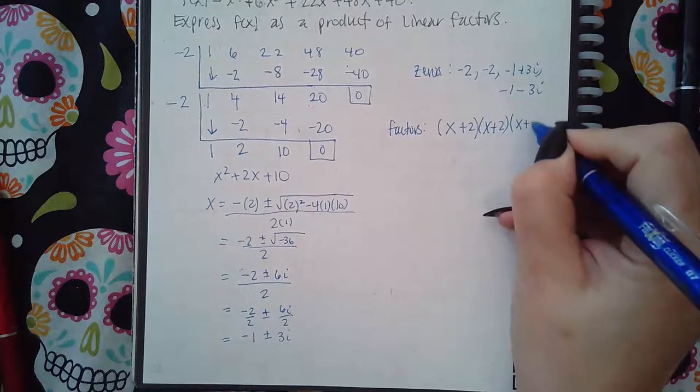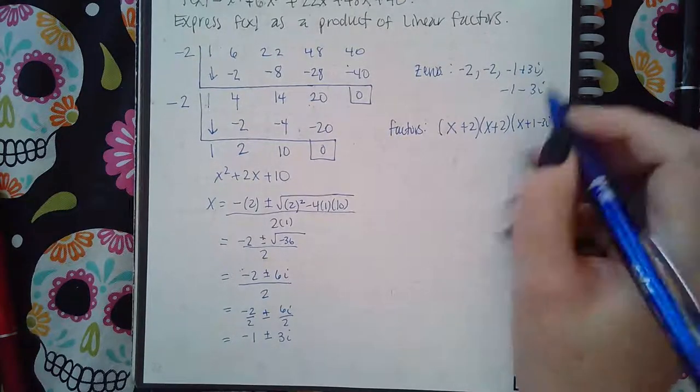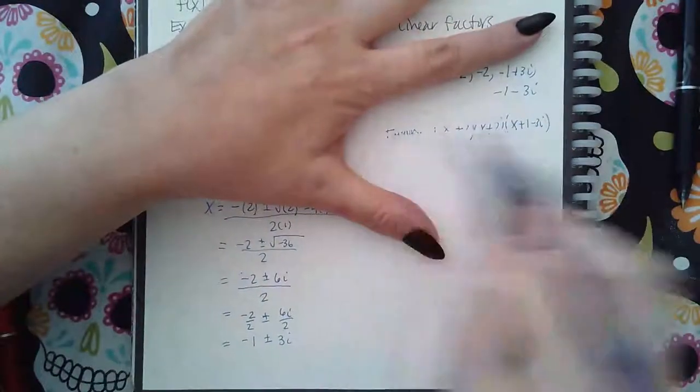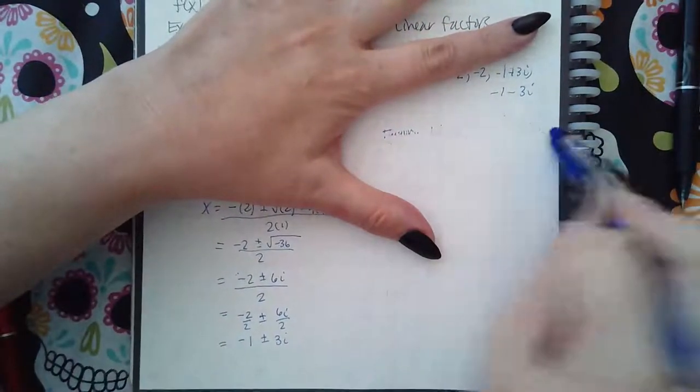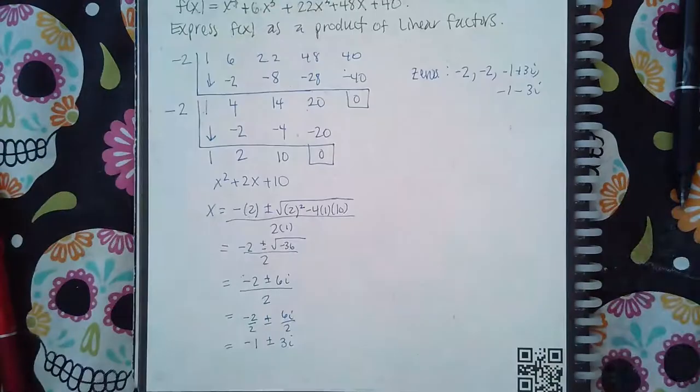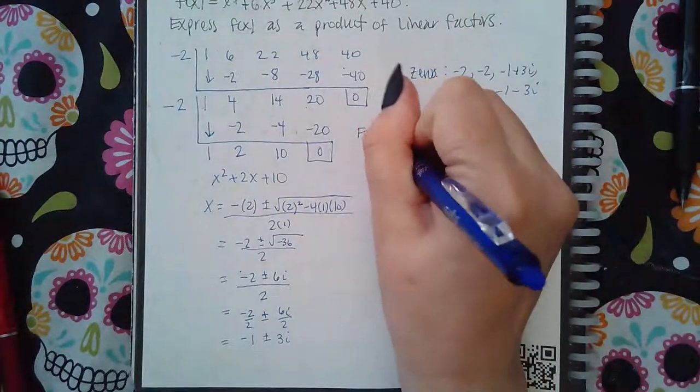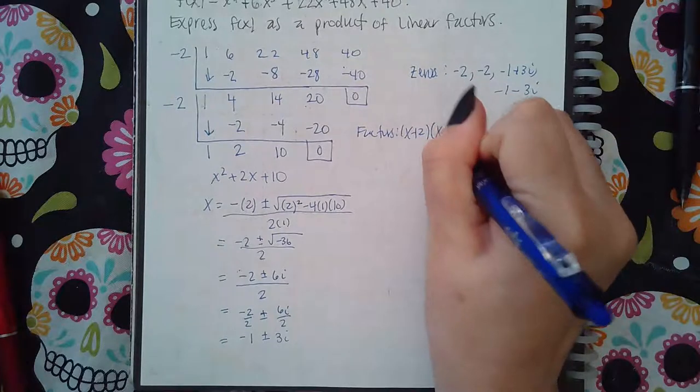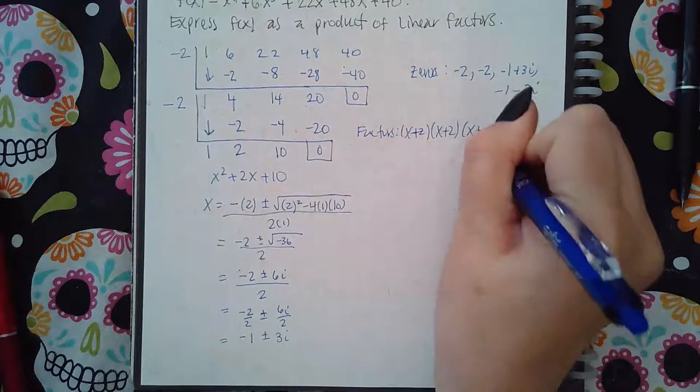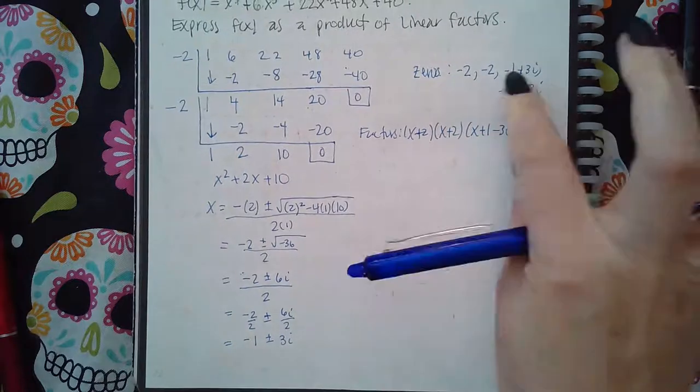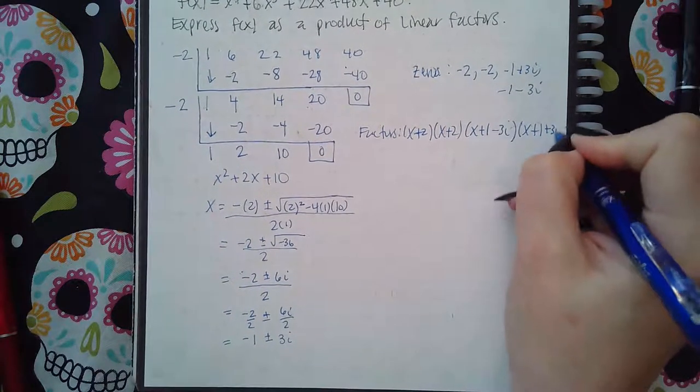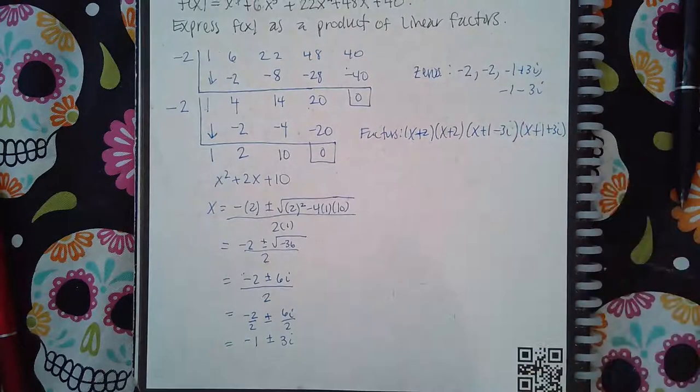So the factors will be x plus 2, x plus 2, x plus 1 minus 3i, and then x plus 1 plus 3i, with opposite signs.